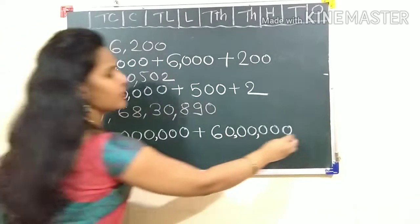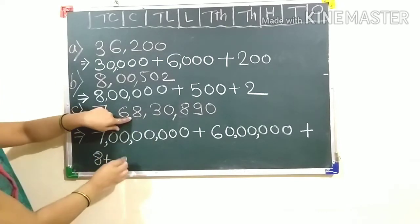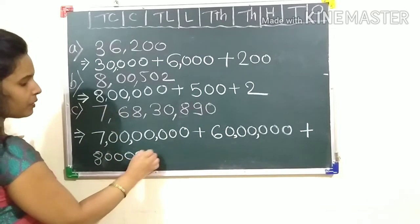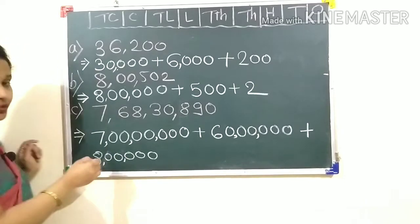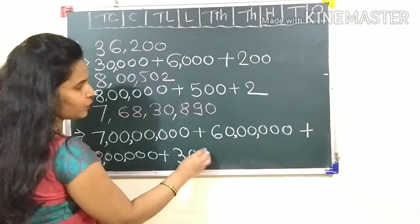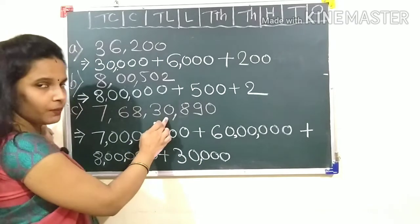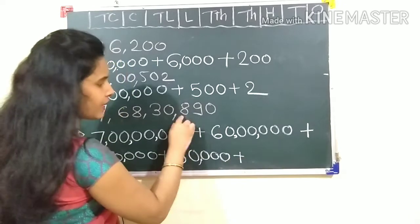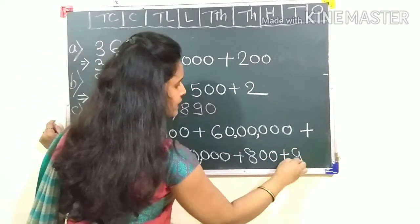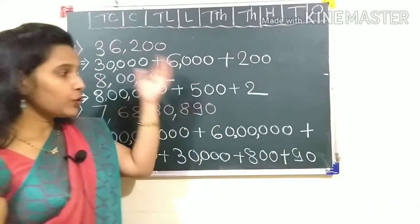Plus six with six digits gives us 60,00,000. Plus eight with five digits is 8,00,000. Plus three with four digits is 30,000. If there is zero, then nothing will come. Plus eight with two digits is 800. Plus nine with one digit is 90. The last digit is zero, so nothing will come.